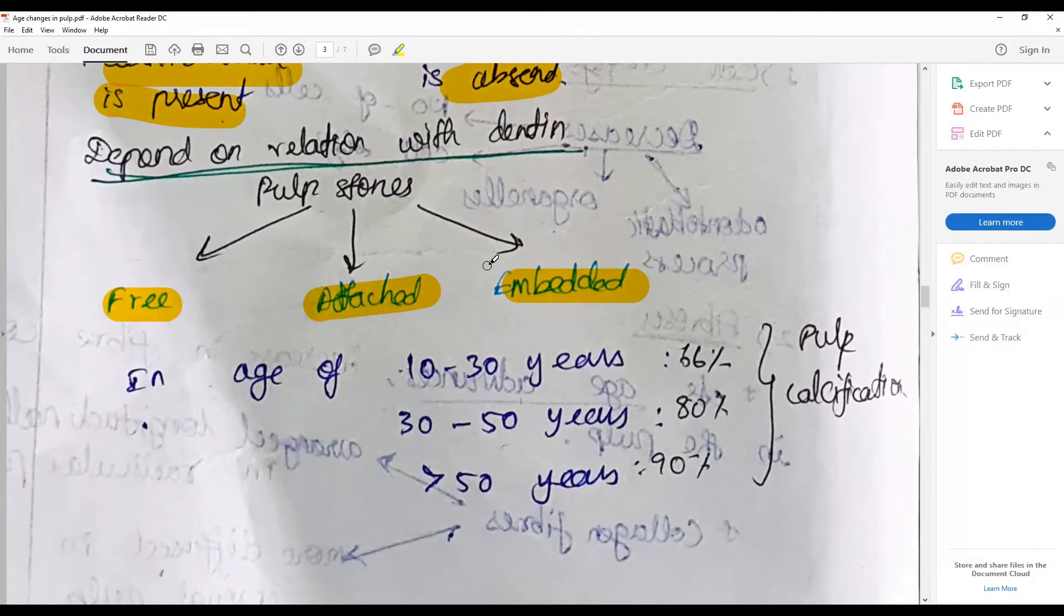Whereas embedded, the full pulp stone is covered on more than one surface with the dentin. The rate of pulp calcification: at age of about 10 to 30 years it is about two-thirds of them have some degree of calcification. About 30 to 50 years, 80 percent of them have some evidence of calcification, not necessarily pathological.